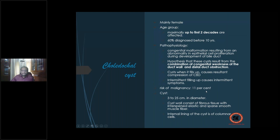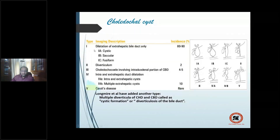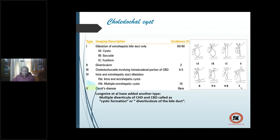The classification used is Todani's classification with Longmire's modification — five types. Type 1 is the most common: 1a (cystic dilatation), 1b (saccular), and 1c (fusiform dilatation of the extra-hepatic biliary channel). Type 1c also involves the area adjacent to the pancreatic duct. Types 2, 3, 4a, 4b, and 5 also exist. Type 6 was added by Longmire — multiple diverticula. Overall, 90 percent are type 1.